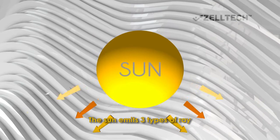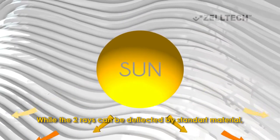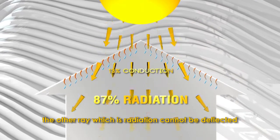The sun emits three types of rays. While two rays can be deflected by standard material, the other ray which is radiation cannot be deflected.